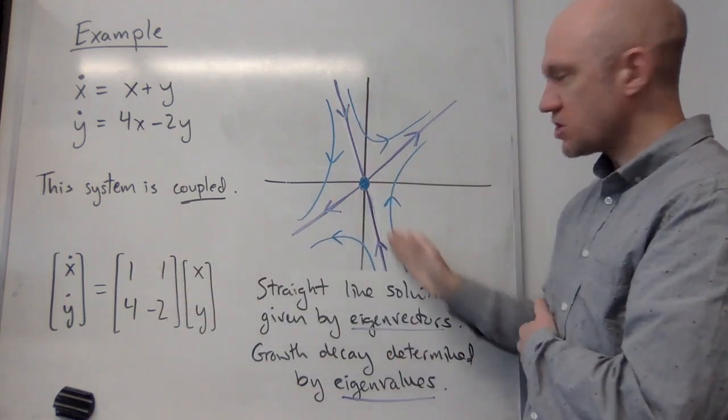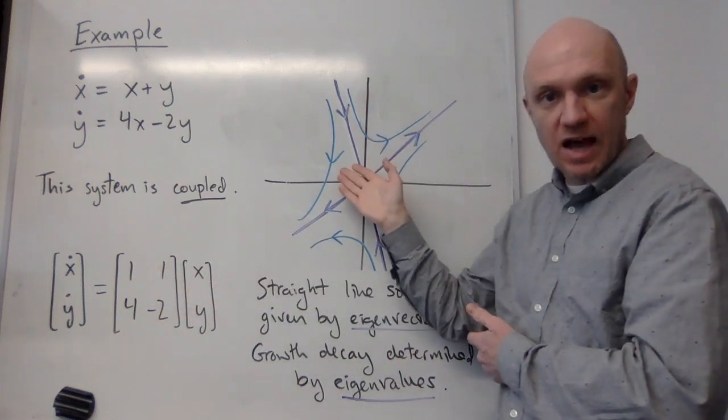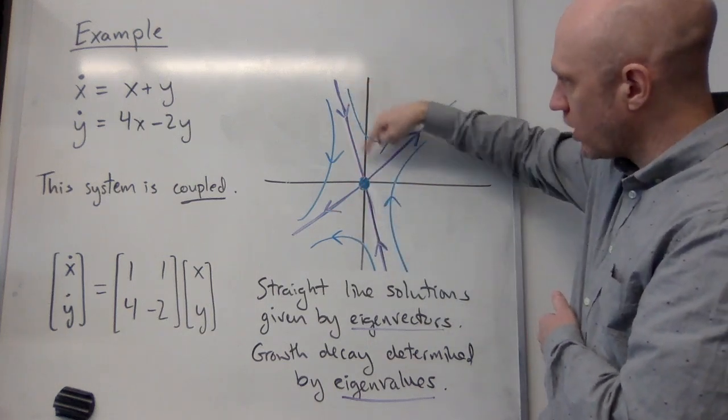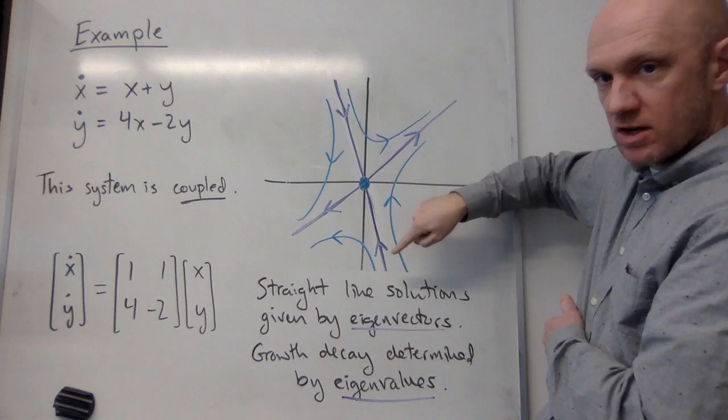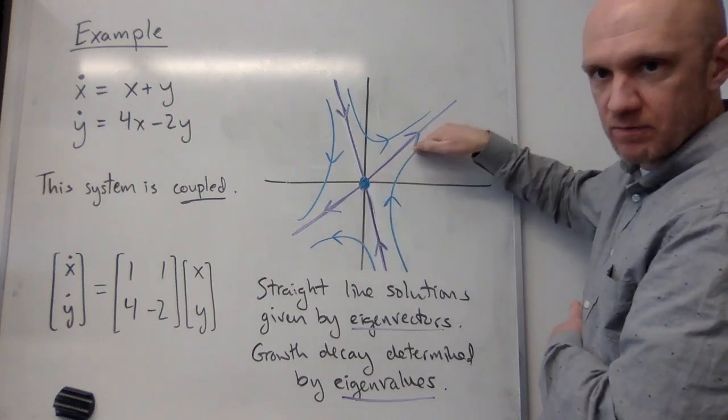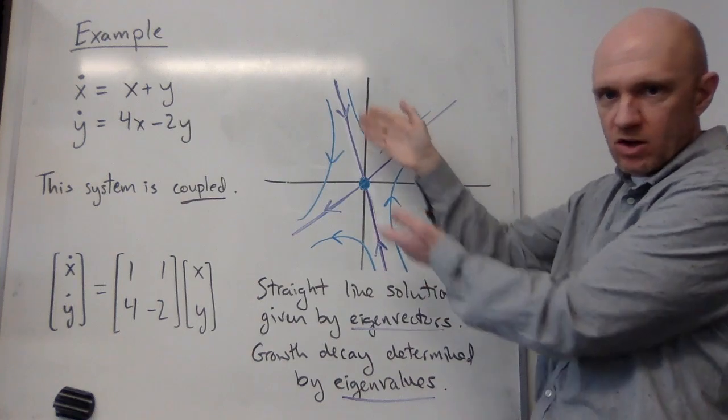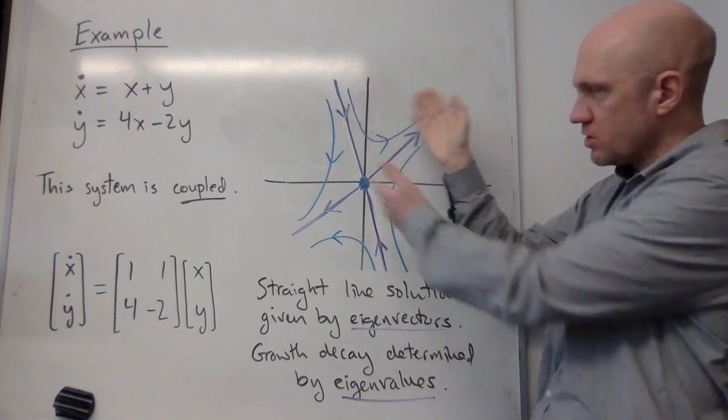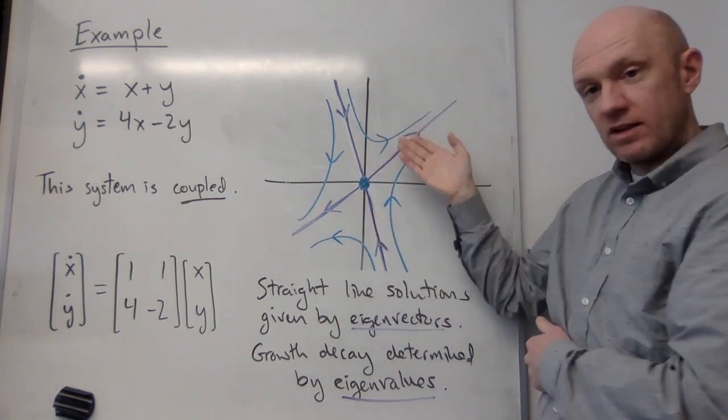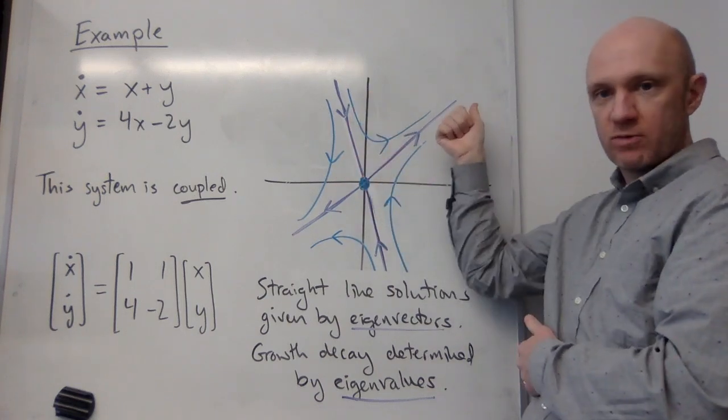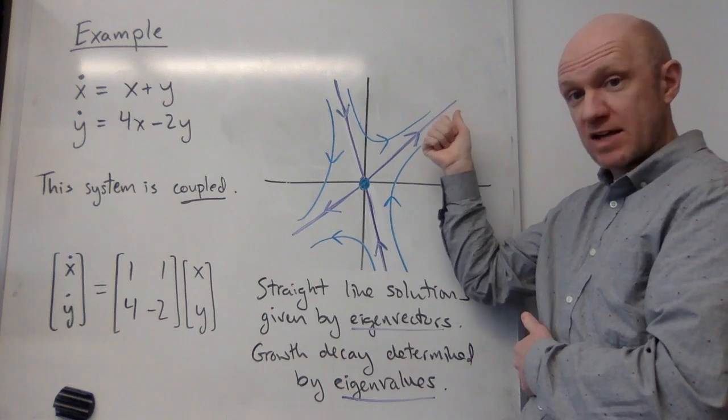These directions are the directions of the eigenvectors. These are eigenspaces right here. These are the directions of the eigenvectors. Here's one eigenvector direction, this one right here, and another eigenvector direction. Now, how do I know what's growing or shrinking along which straight line solution or along which axis? Well, the eigenvalues for those eigenvectors tell me whether I'm coming toward the origin or going away from the origin. And they also tell me how fast.